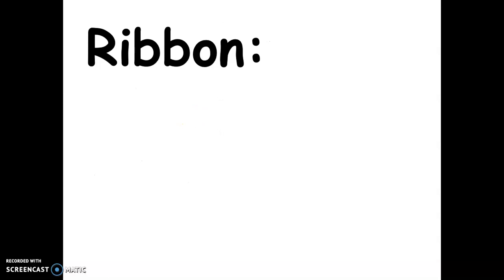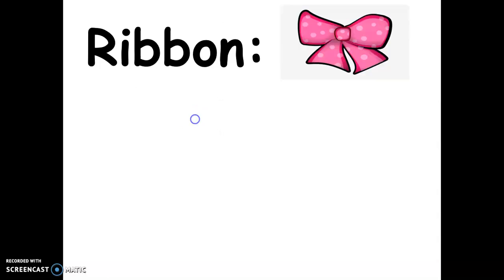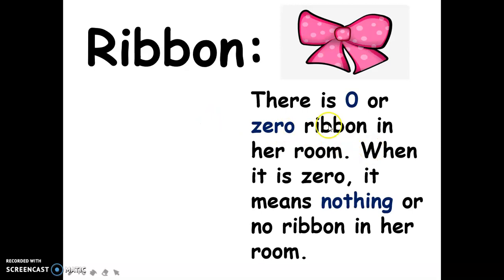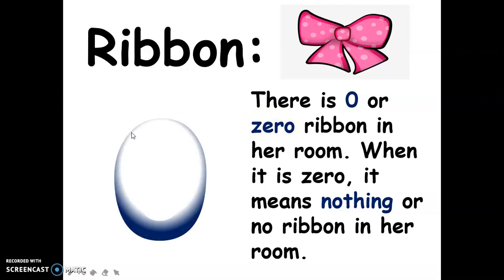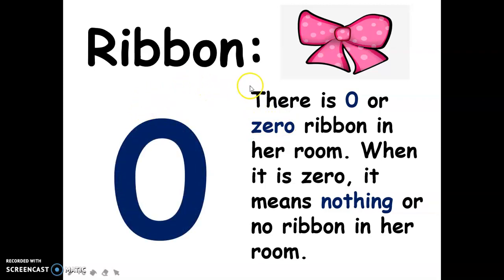First is the ribbon. There is zero ribbon in her room. Take note of the spelling of zero — when it is zero, it means nothing, or no ribbon in her room. This is the spelling of zero, and this is the numerical symbol.